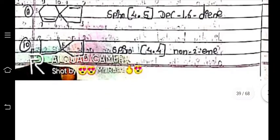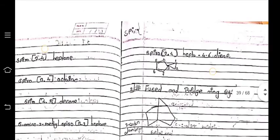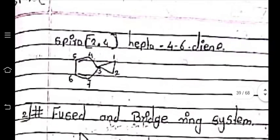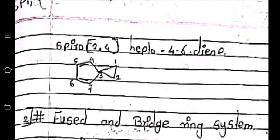Next is spiro[4.4]non-2-ene. The last structure is spiro[2.4]hepta-4,6-diene. This is all about the nomenclature of spiro compounds.